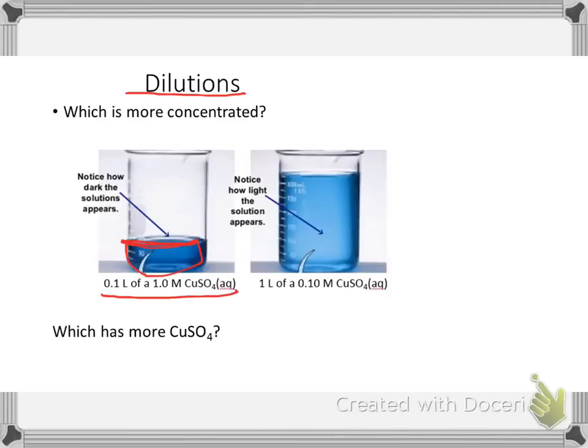And here I have it in the beaker, and I take that solution and I add a bunch of water to it, distilled water, and I end up with this. I end up with 1 liter, now instead of 100 milliliters, and I have 0.1 molar copper sulfate.